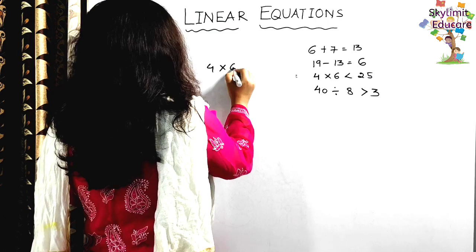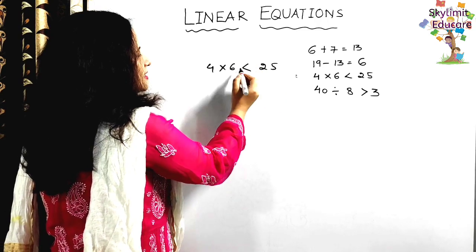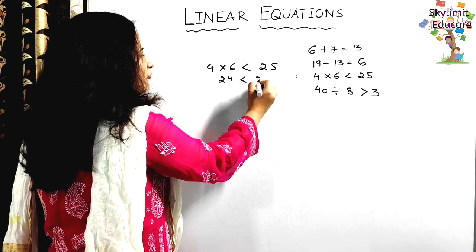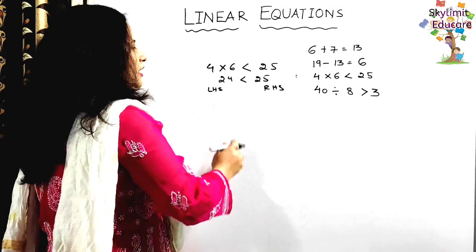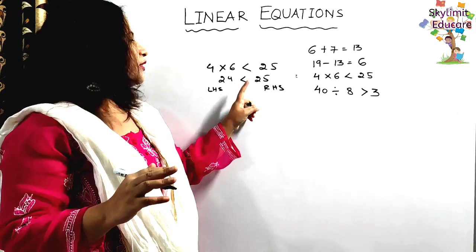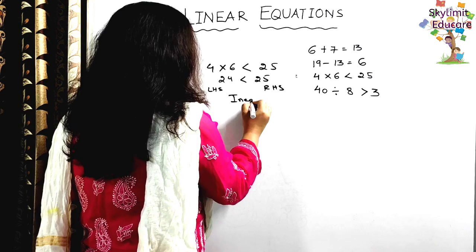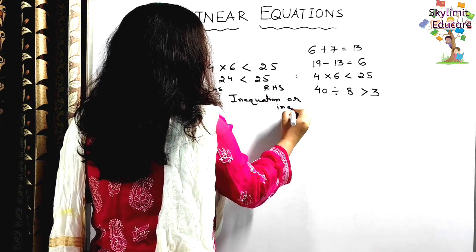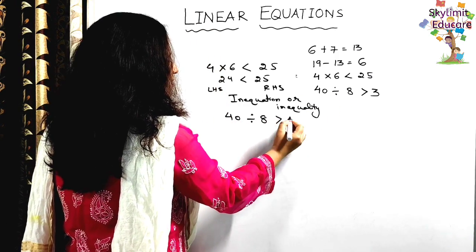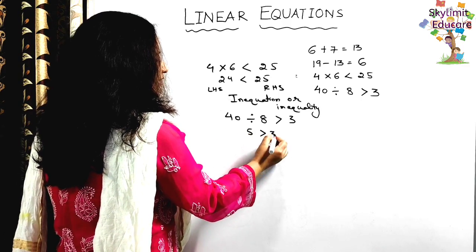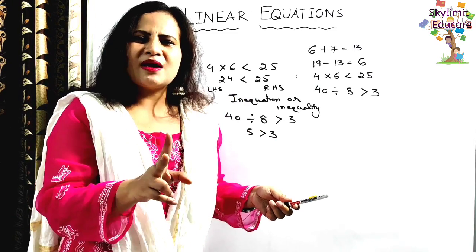The third statement: 4 multiplied by 6 is less than 25. Here there is no equal to sign — only a less than sign. 4 times 6 is 24, and 24 is less than 25. Both sides are not equal, so this is not an equation — it is called an inequation or inequality.